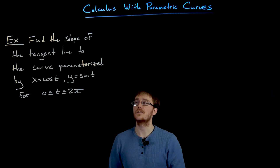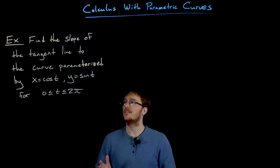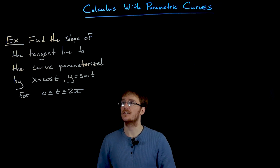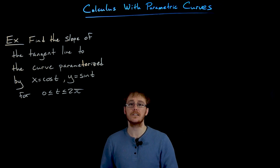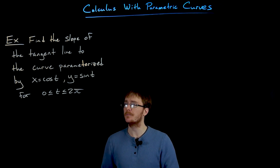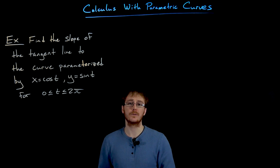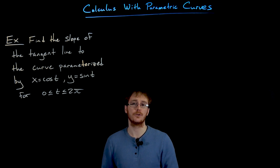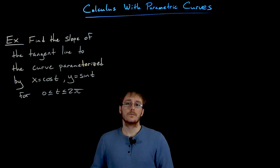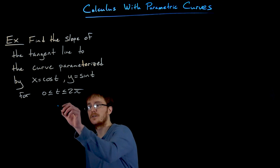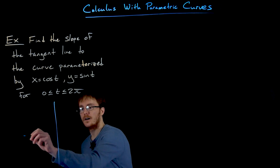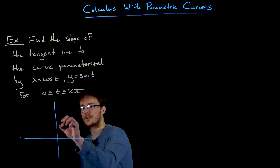Welcome back everyone. In this example we are asked to find the slope of the tangent line to the curve parameterized by x equals cosine of t and y equals sine of t, for t values on the interval between 0 and 2 pi. We should recognize this parameterization as just the parameterization of our unit circle.